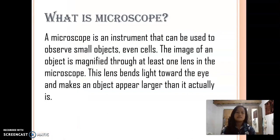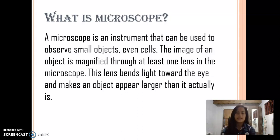What is a microscope? A microscope is an instrument that can be used to observe small objects, even cells. The image of an object is magnified through at least one lens in the microscope. This lens bends light toward the eye and makes an object appear larger than it actually is.